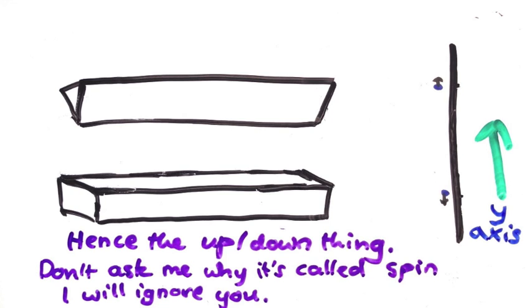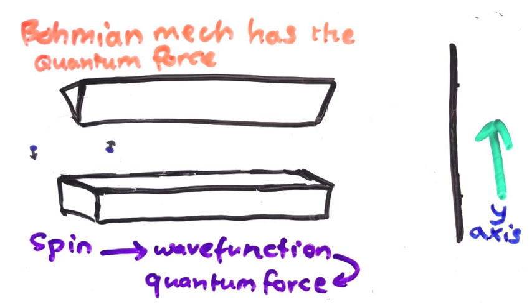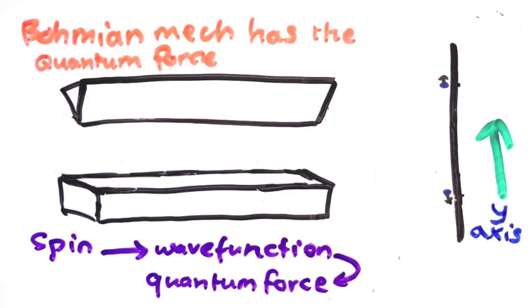Remember that in Bohmian mechanics, there is a quantum force that depends on the wave function. Well, spin is one of the things that influence the wave function, so the quantum force takes spin into account and then pushes the electron in the correct directions to get these cases.